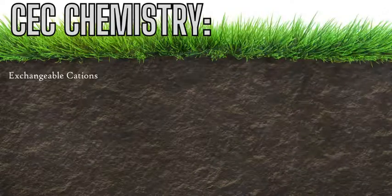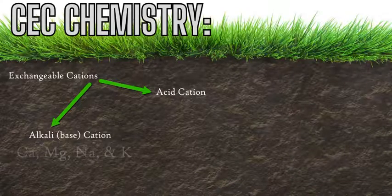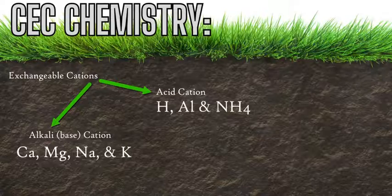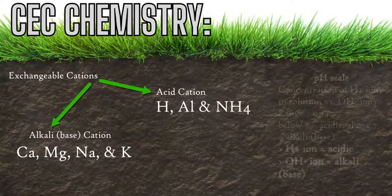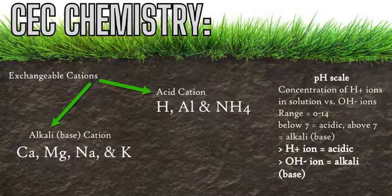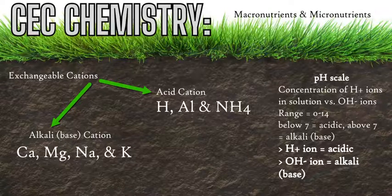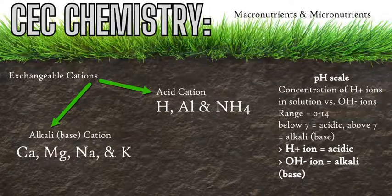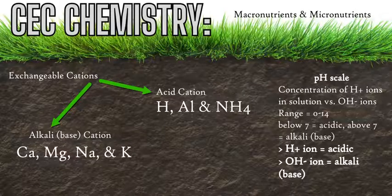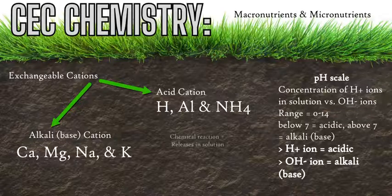The exchangeable cations are either base or alkali, or acid, based on the pH scale. The base or alkali cations are calcium, magnesium, potassium, and sodium — the four major nutrients for the plant. The acid or non-alkali cations are hydrogen, aluminum, and ammonium.